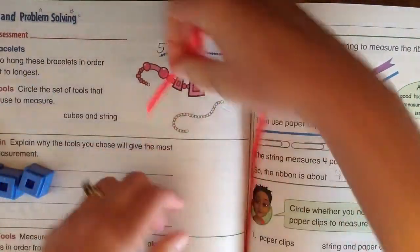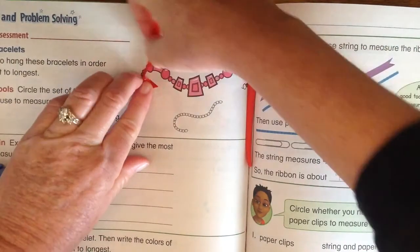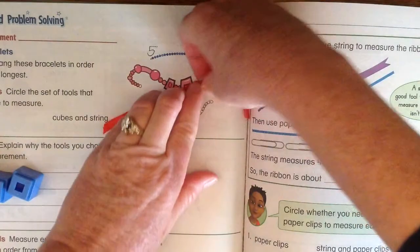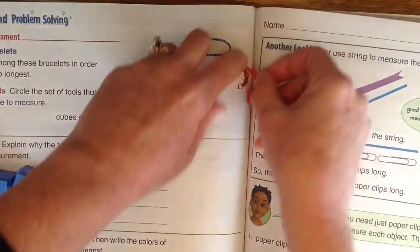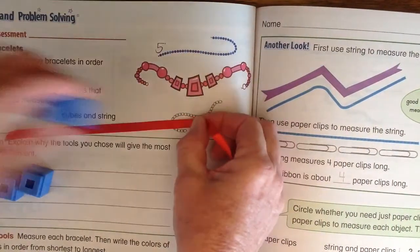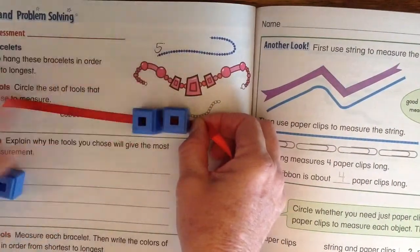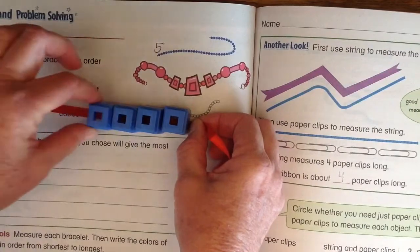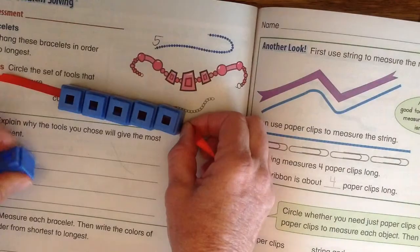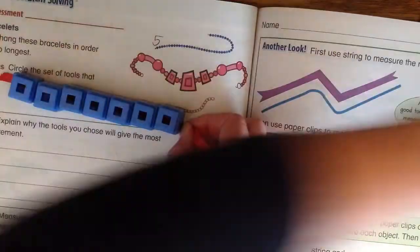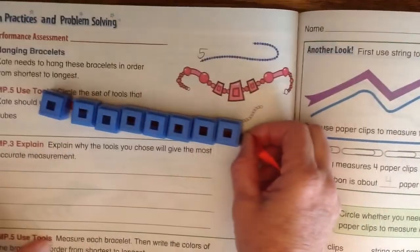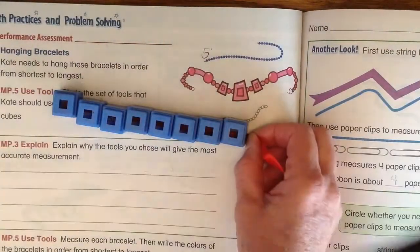Then I use the string for this one and I go all the way around and around and up and around. About that far. So now I have one, two, three, four, five, I have to get my other cubes. Six, seven, eight. That one's about eight cubes long when you get it all straightened out.